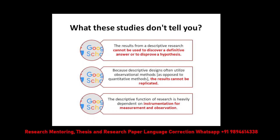Second limitation: the results cannot be replicated — the same result cannot be replicated under other conditions because it uses observation method. This observation method records what is there, but the same observation may not happen the next time. It simply observes the phenomenon within a particular time frame. Third limitation: descriptive research heavily depends on instrumentation for measurement and observation, as it cannot do so independently.